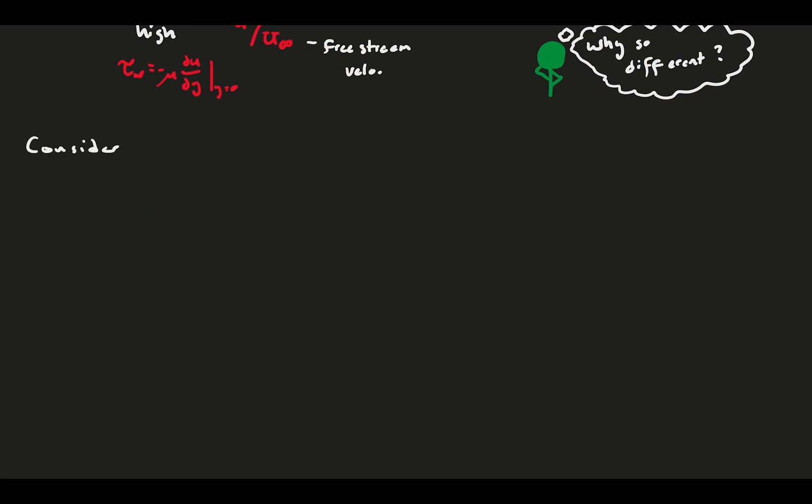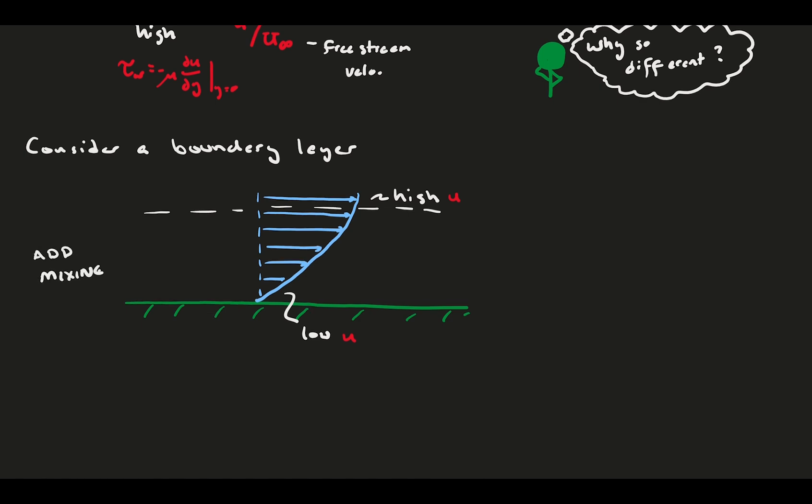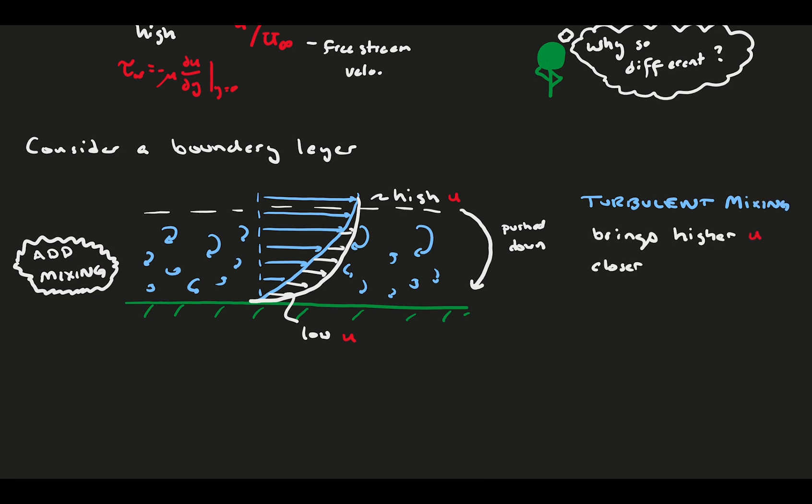Let's consider the structure of a boundary layer on a flat plate. Generally, a basic boundary layer has high velocity at the top and low velocity at the bottom. Now, let's add a bunch of mixing to these smooth streamlines that comes with turbulent flow. What this mixing does is pull the high velocity freestream flow into the boundary layer much more efficiently. And generally, this mixing pushes much higher velocity towards the wall. As a result, turbulent boundary layers with all their mixing and chaos are much more energetic and higher velocity than laminar boundary layers.